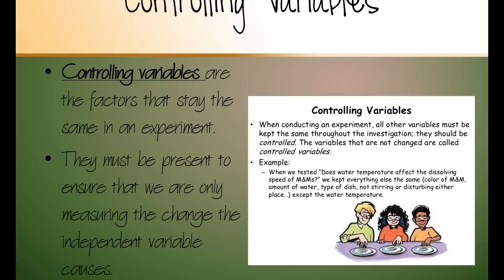We keep them the same because we only want to know if water temperature is affecting the dissolving speed. If we were stirring some of them and not others, if we were doing different colored M&Ms, we wouldn't be sure if it was dissolving because of the water temperature, the color of the M&Ms, or because we were stirring it. That's why we can only have one thing that changes, and that's our independent variable.